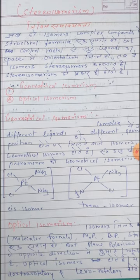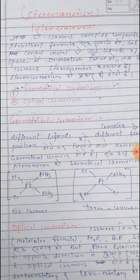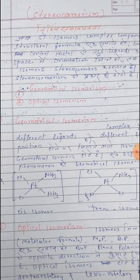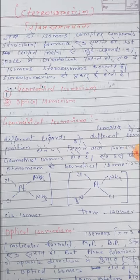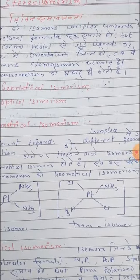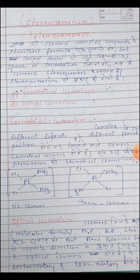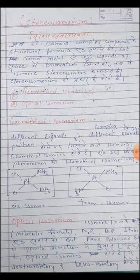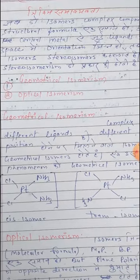In stereo isomerism, the ligands attached to the central metal — their spatial orientation (Hindi: dik, orientation, abhivinyas) in space is different. When the orientation of ligands is different, we call them stereo isomers.